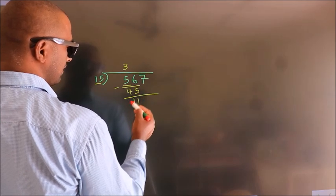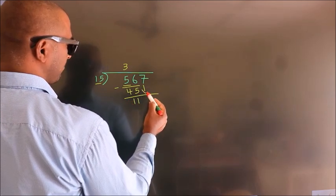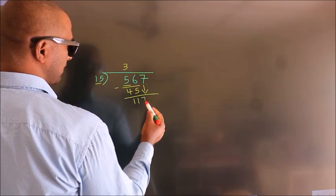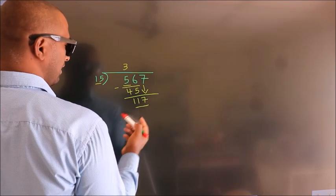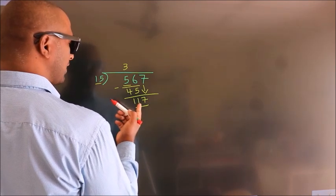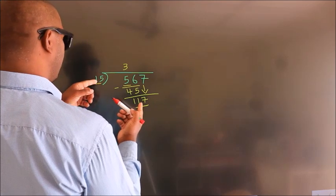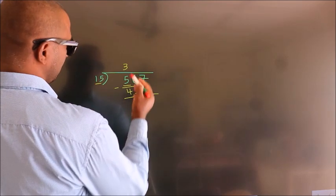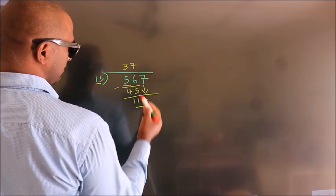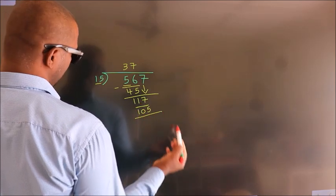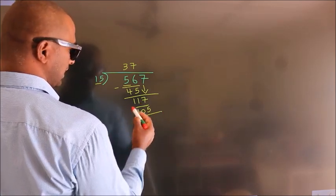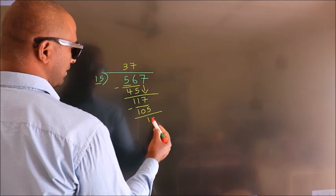After this, bring down the beside number, so 7 down. So 117. A number close to 117 in the 15 table is 15 sevens, 105. Now we subtract and we get 12.